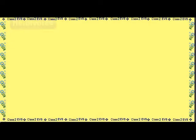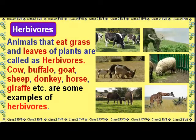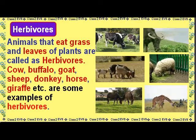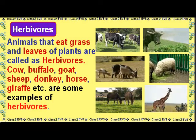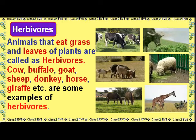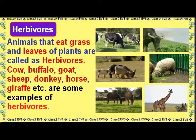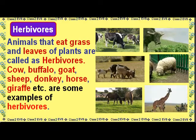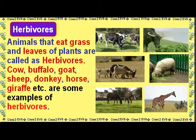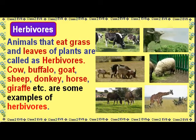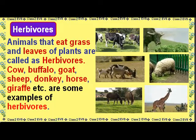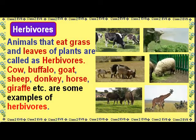Herbivores: Animals that eat grass and leaves of plants are called herbivores. Some examples of herbivores are cow, buffalo, goat, sheep, donkey, horse, giraffe, etc.